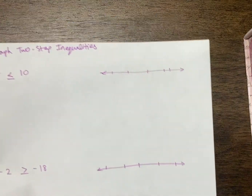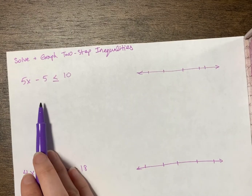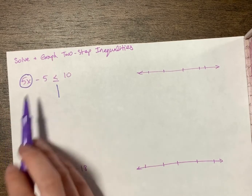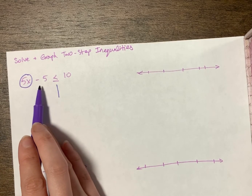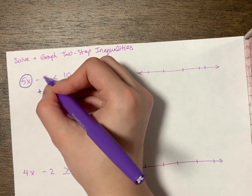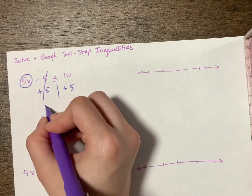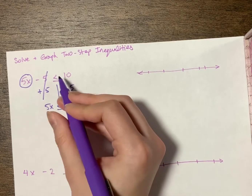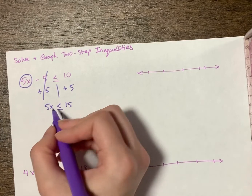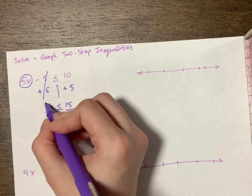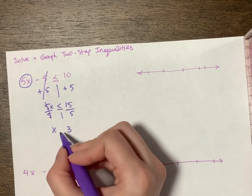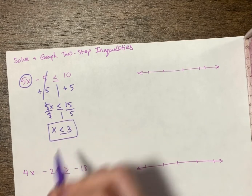Let's do some examples — I'll do three. I'm going to draw my line and circle the variable term. I want to get rid of the minus five by adding five to both sides. The fives cancel, so I bring down 5x, copy down the less than or equal to sign, and 10 plus five is positive 15. I draw my line and divide both sides by five. Five divided by five gives me x, and 15 divided by five is three. So my answer is x is less than or equal to three.